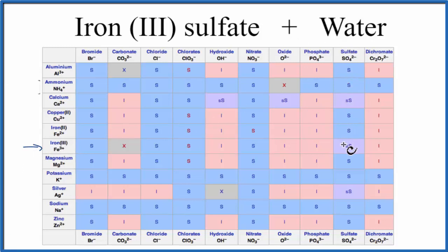So we come down here, and where they meet, we have SS, and that means slightly soluble. So iron 3 sulfate is slightly soluble in water. Some of it will dissolve, but most of it will remain a solid.